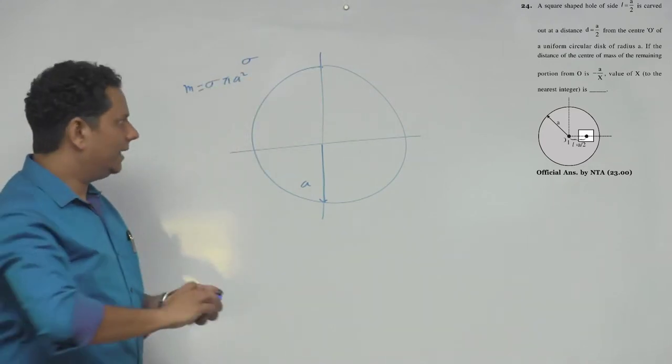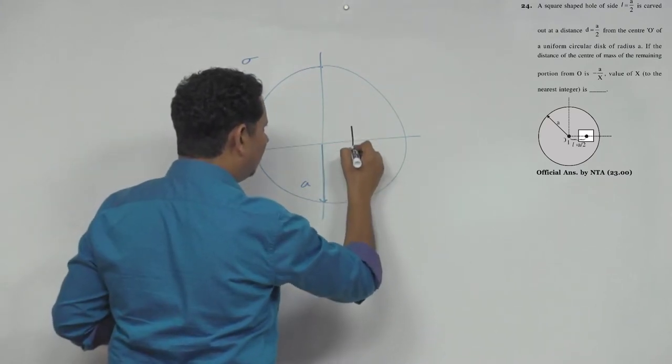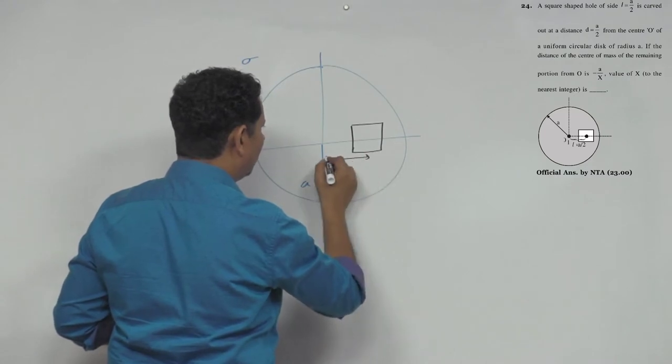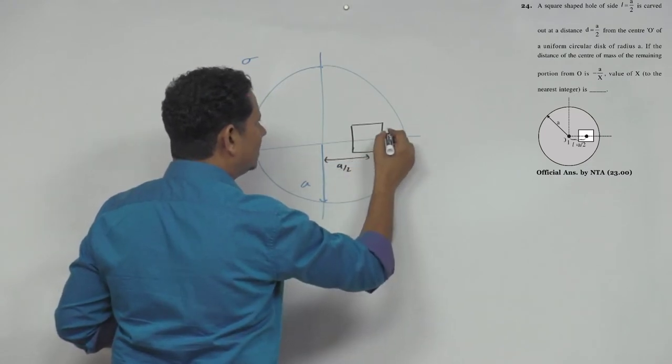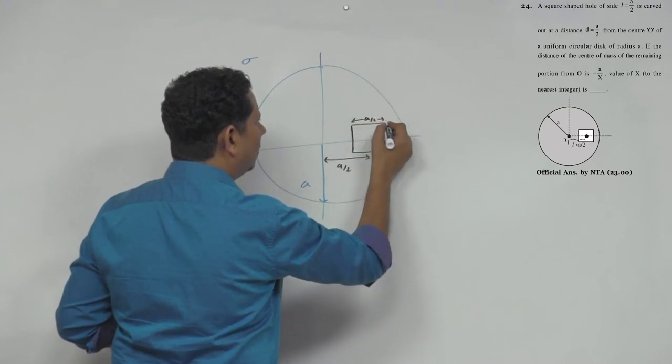Now we have here, here A by 2, here a square cut, and this side here A by 2, and this A by 2.